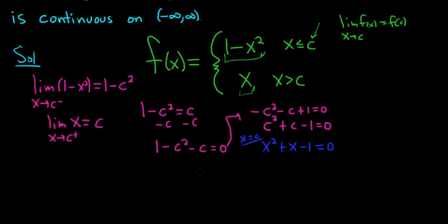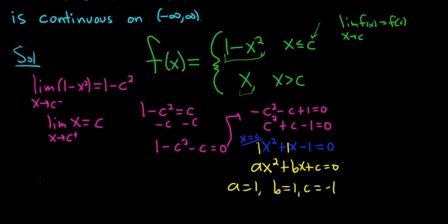So now all we'll do is use the quadratic formula. Here a is 1, b is 1, and c is negative 1. Remember the form for the quadratic formula is ax squared plus bx plus c equals 0. So a is 1, b is 1, and c is negative 1. And the formula says that x is equal to negative b plus or minus the square root of b squared minus 4ac all over 2a.